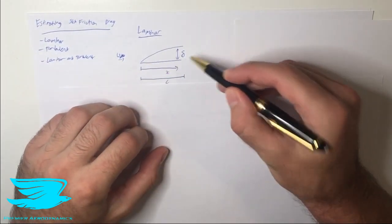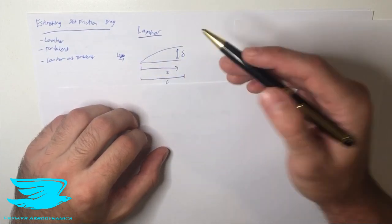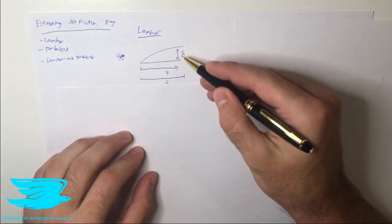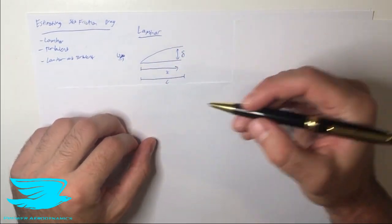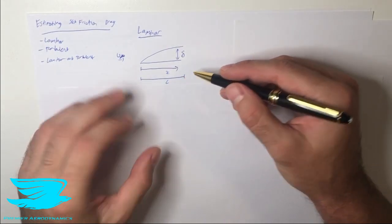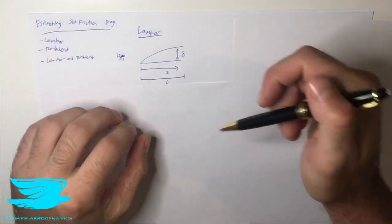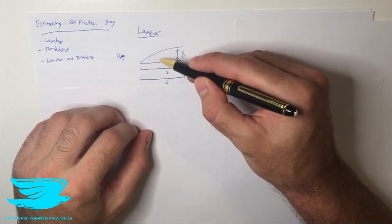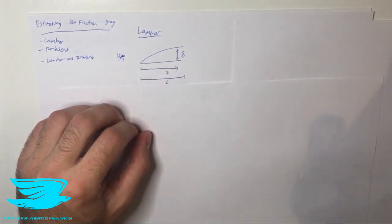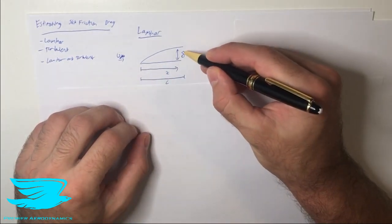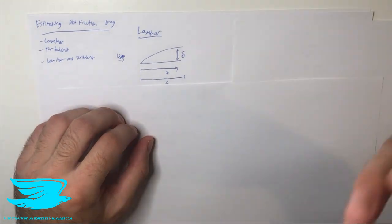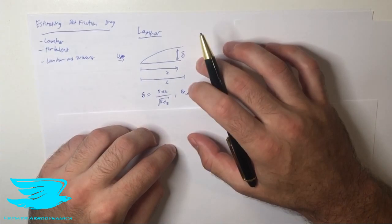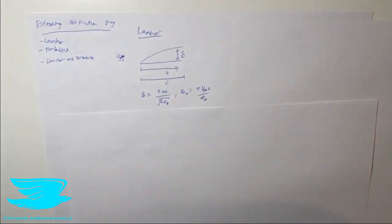Let's say we have a flat plate here and flow comes over and under it. The flow comes along and goes over and underneath, and as it goes along, the boundary layer keeps increasing in size. The flat plate is a distance C meters long, and we can go along the flat plate an x amount — say, 0.1, 0.2, 0.3 meters as we progress along. This delta is the boundary layer thickness, and it's quite easy to calculate for a Blasius boundary layer.